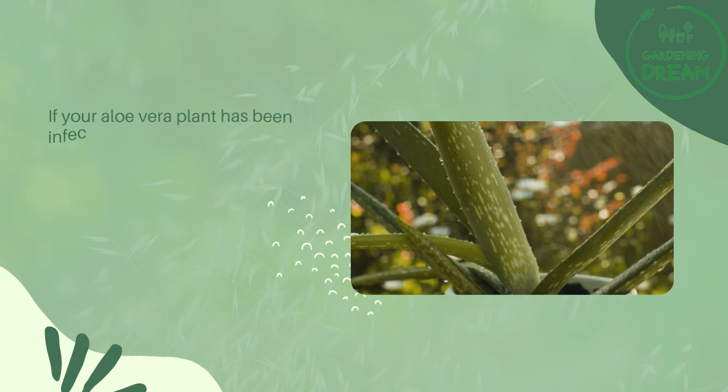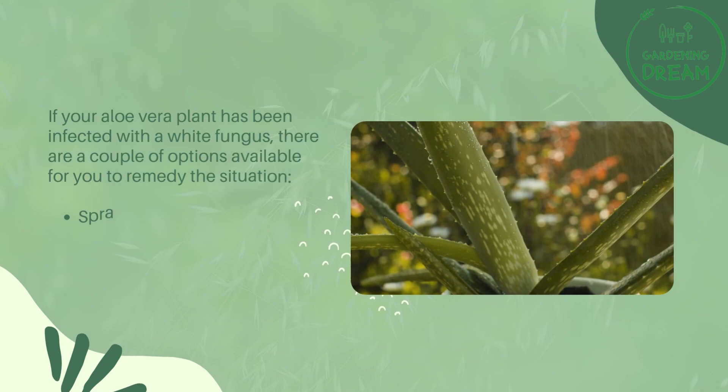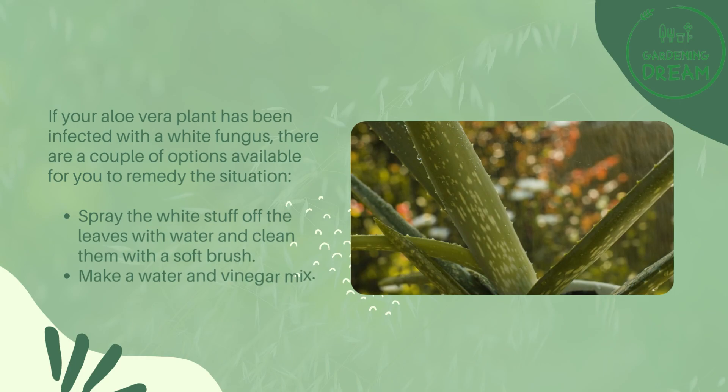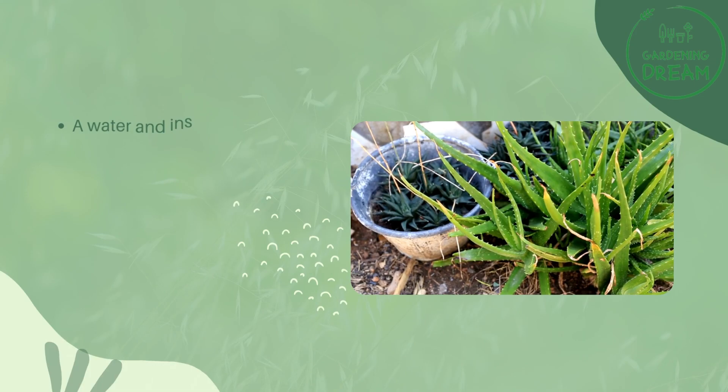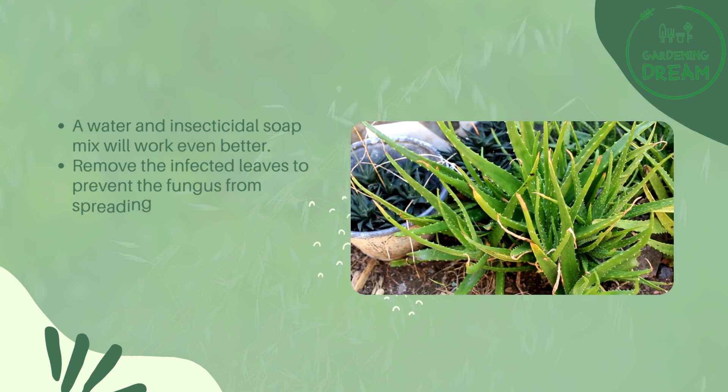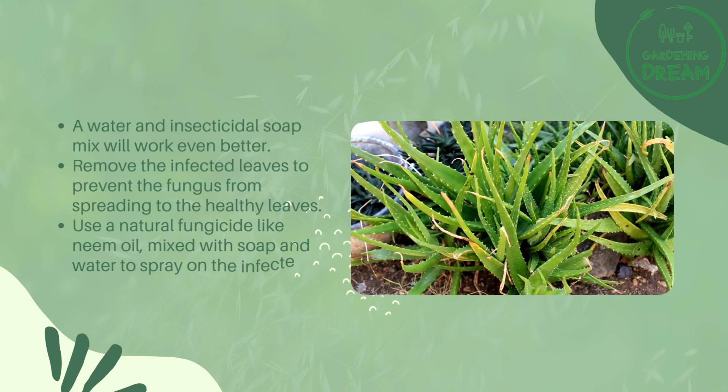To treat aloe vera plant white fungus, if your aloe vera plant has been infected with a white fungus there are a couple of options available. Spray the white stuff off the leaves with water and clean them with a soft brush. Make a water and vinegar mix, or a water and insecticidal soap mix, which will work even better. Remove the infected leaves to prevent the fungus from spreading to the healthy leaves. Use a natural fungicide like neem oil mixed with soap and water to spray on the infected parts of the plant.